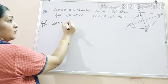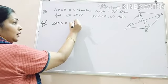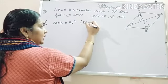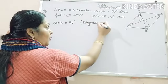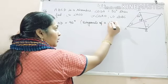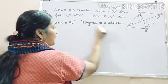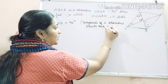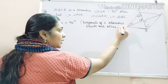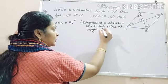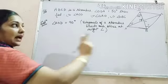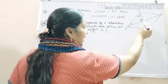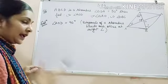Angle AOD will be equal to 90 degrees. Why? This angle will be 90 degrees because the diagonals of a rhombus bisect each other at right angles. Therefore, this angle AOD will be equal to 90 degrees.